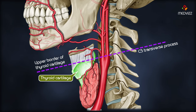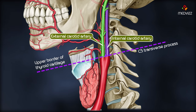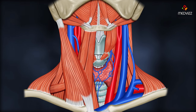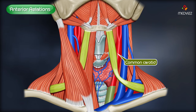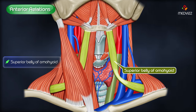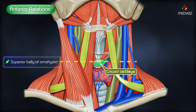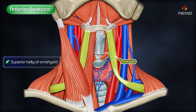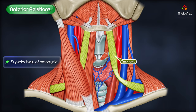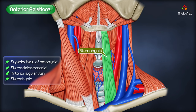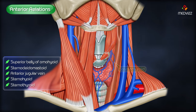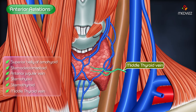At the level of the upper border of the thyroid cartilage, the artery ends by dividing into the external and internal carotid arteries. Regarding the anterior relations of the artery in the neck: the common carotid is crossed by the superior belly of the omohyoid at the level of the cricoid cartilage. Below the omohyoid muscle, the artery is deeply situated and covered by the sternocleidomastoid, the anterior jugular vein, the sternohyoid, and the sternothyroid, as well as the middle thyroid vein.